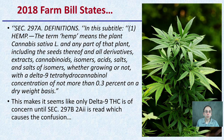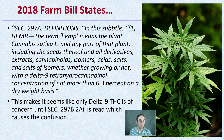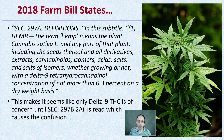So first off, what does the Farm Bill actually state? The Farm Bill has a definition here: the term hemp means the plant Cannabis sativa L., and any part of that plant, including the seeds thereof and all derivatives, extracts, cannabinoids, isomers, acids, salts, and salts of isomers, whether growing or not,